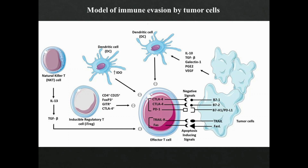This modulation affects the maturation of dendritic cells, resulting in defective antigen presentation. Tumor cells also secrete B7-1, B7-2, and PD-L1 ligands, which are co-inhibitory mediators responsible for tolerance and immune deviation. Tumor cells also elicit Fas and TRAIL-mediated apoptosis and, above all, induce immunosuppressive cells like T-regulatory cells to evade immune responses.